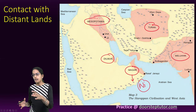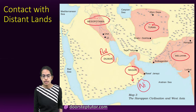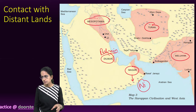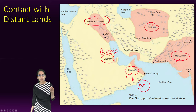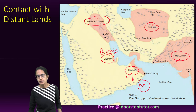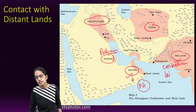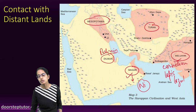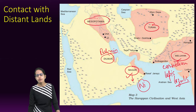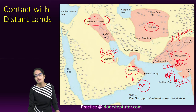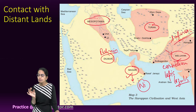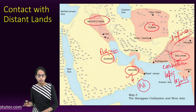Mesopotamia also received goods from Dilman, which is present-day Bahrain. Magan and Meluha are known for trade in Lapis Lazuli, Carnelian, copper, gold, and varieties of wood — with Lapis Lazuli and Carnelian being the most important. Lapis Lazuli was a blue stone highly valued from the region of Meluha. Mesopotamian texts also refer to Meluha as the land of seafarers, and ships and boats have been depicted on Harappan seals.